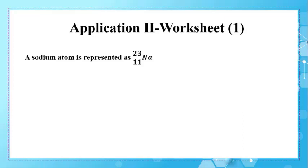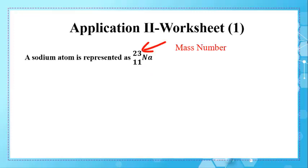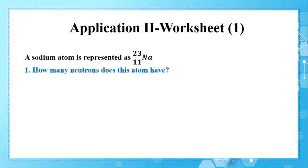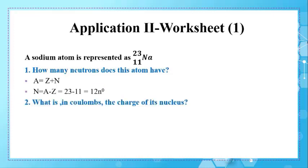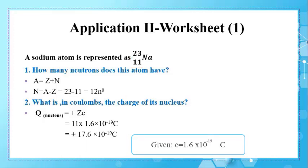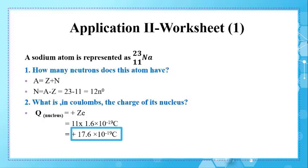A sodium atom is represented as ²³₁₁Na. The number 11 is the atomic number — the number of protons in the nucleus — and 23 is the mass number, representing the number of nucleons. First question: how many neutrons does this atom have? N = A − Z = 23 − 11 = 12 neutrons. Second question: what is the charge of its nucleus in coulombs? Using Q = +ZE: Q = 11 × 1.6 × 10⁻¹⁹ = +17.6 × 10⁻¹⁹ C.